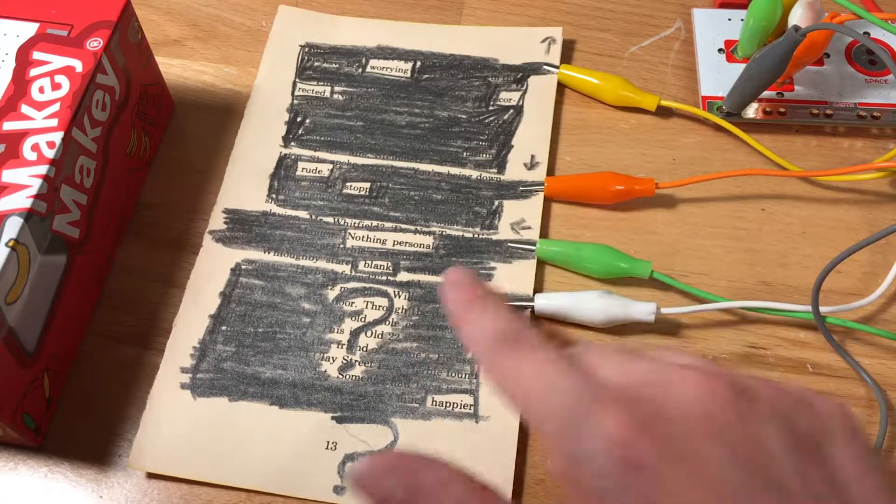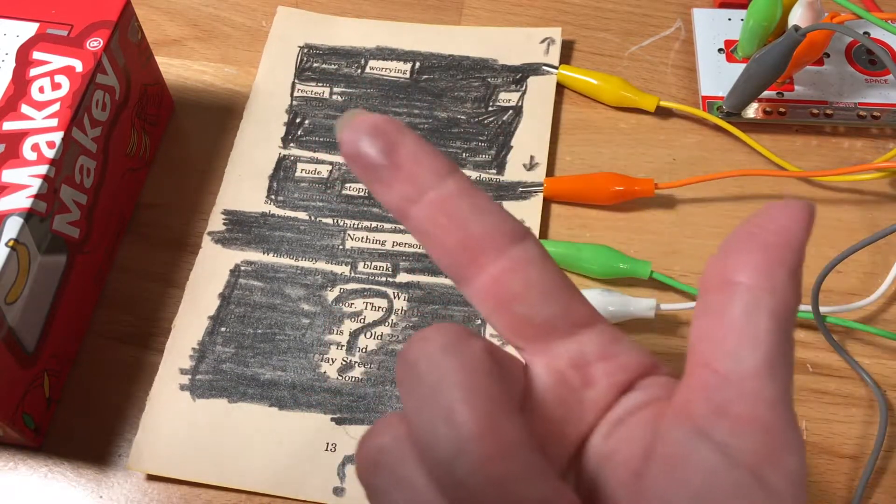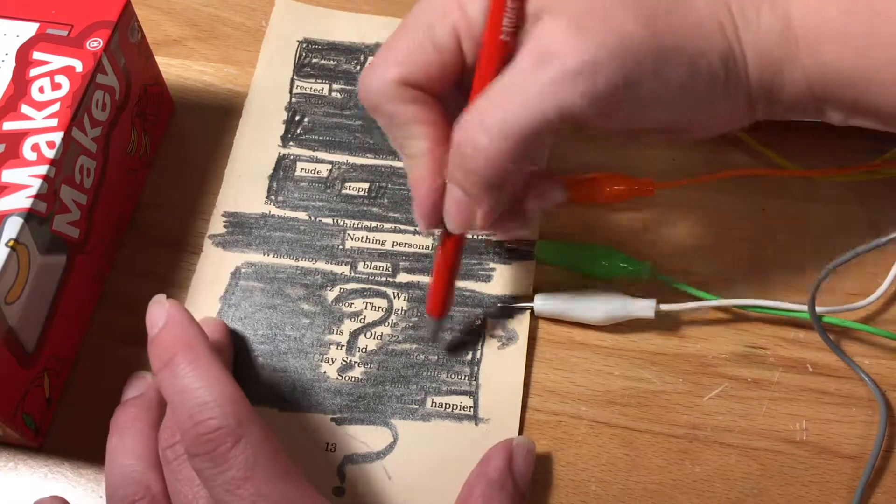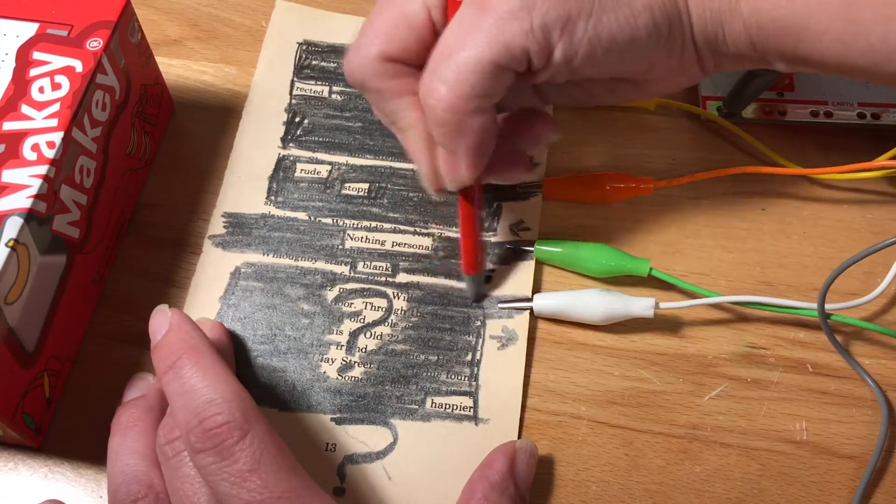So the graphite you'll notice too is really thick. It gets smudgy on my finger. So sometimes you do have to redraw to get your circuit working.